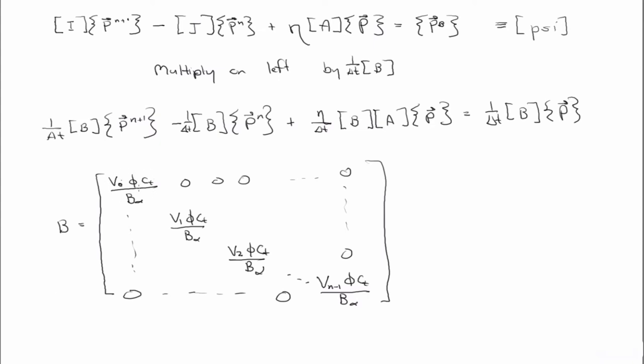So B has a form like that. And if you look at what these terms represent, they actually represent the accumulation of fluid due to increasing or decreasing pressure within the grid block. This is the volume of the ith grid block, then you have the porosity, the total compressibility, and the formation volume factor. And we'll talk about what the formation volume factor does in a second. But this B matrix we're going to call the accumulation matrix. Because again, the terms there represent the accumulation of fluid in a reservoir due to a change of pressure.